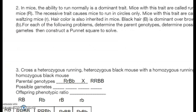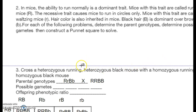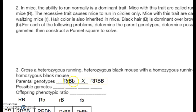Number two: in mice, the ability to run normally is dominant — these are called running mice. The recessive trait causes mice to run in circles only — these are waltzing mice, little r. Hair color is also inherited: black hair (big B) is dominant over brown. We're crossing a heterozygous running, heterozygous black mouse with a homozygous running black mouse.